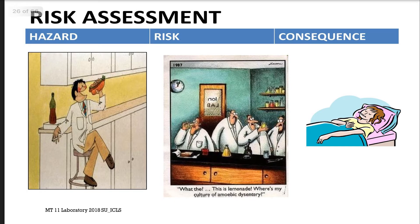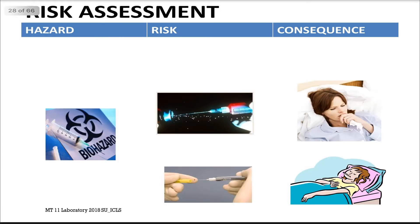These illustrations depict a perfect example of risk assessment involving hazard, risk, and consequences. In the first illustration, a laboratory scientist is eating a hot dog sandwich and soda inside the lab — a violation of general laboratory rules. In the second illustration, a scientist mistakenly drinks a culture of amoebic dysentery thinking it was lemonade, resulting in hospitalization as the consequence. Another example: using a needle for blood collection is a sharps hazard, and the risk involves accidental punctures, which could result in acquiring hepatitis B virus or other blood-borne pathogens.